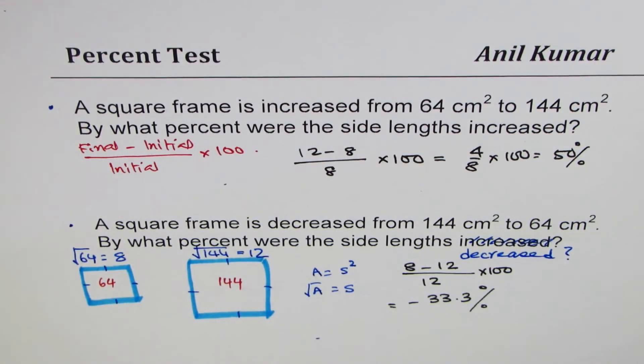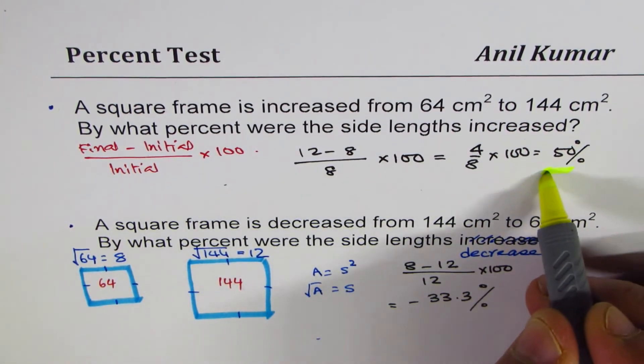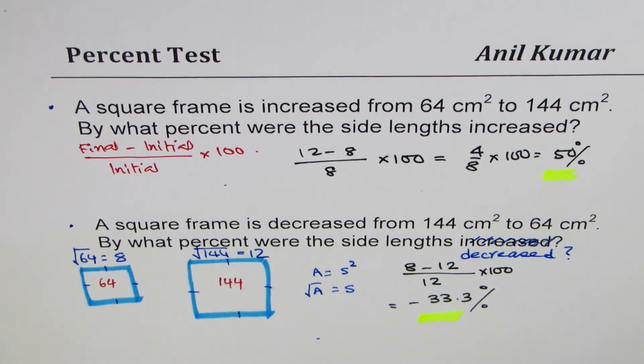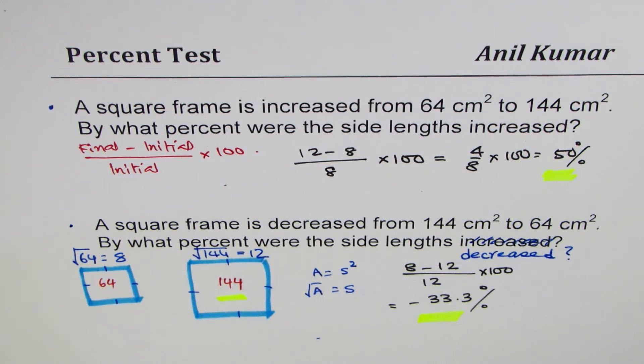Do you see how different the answers are? In the first case when we are increasing, it becomes 50 percent. In the second case when we are decreasing, it becomes 33.3 percent. You get the idea? The reason is: in the second case we started with a bigger amount, so that goes in the denominator and reduces the percent. That is the reason which you need to appreciate when working with percent change questions.